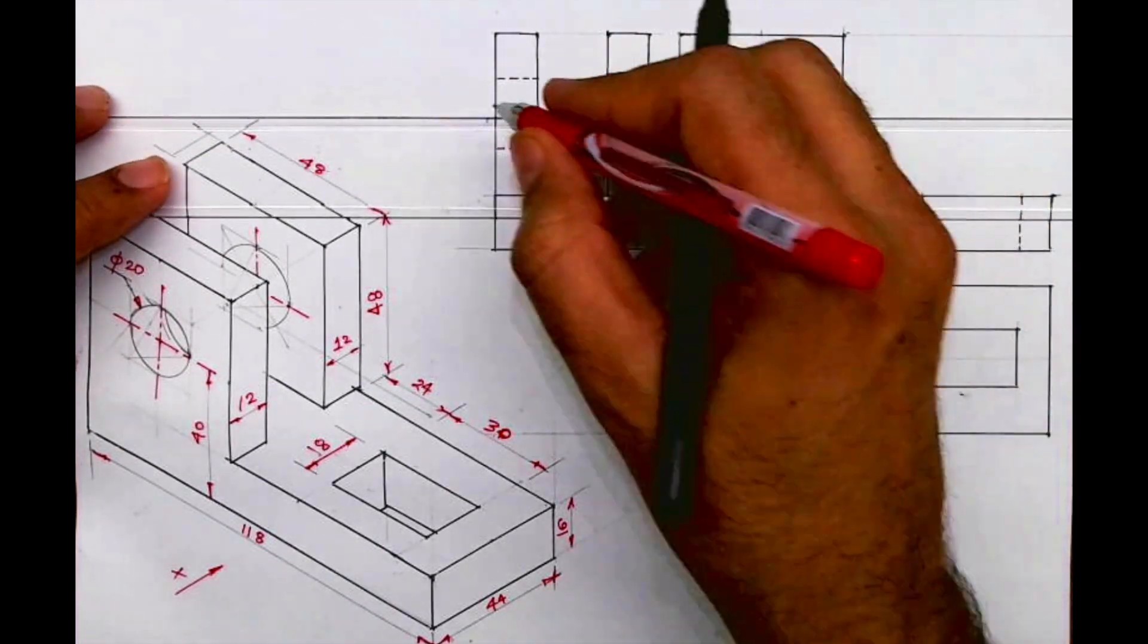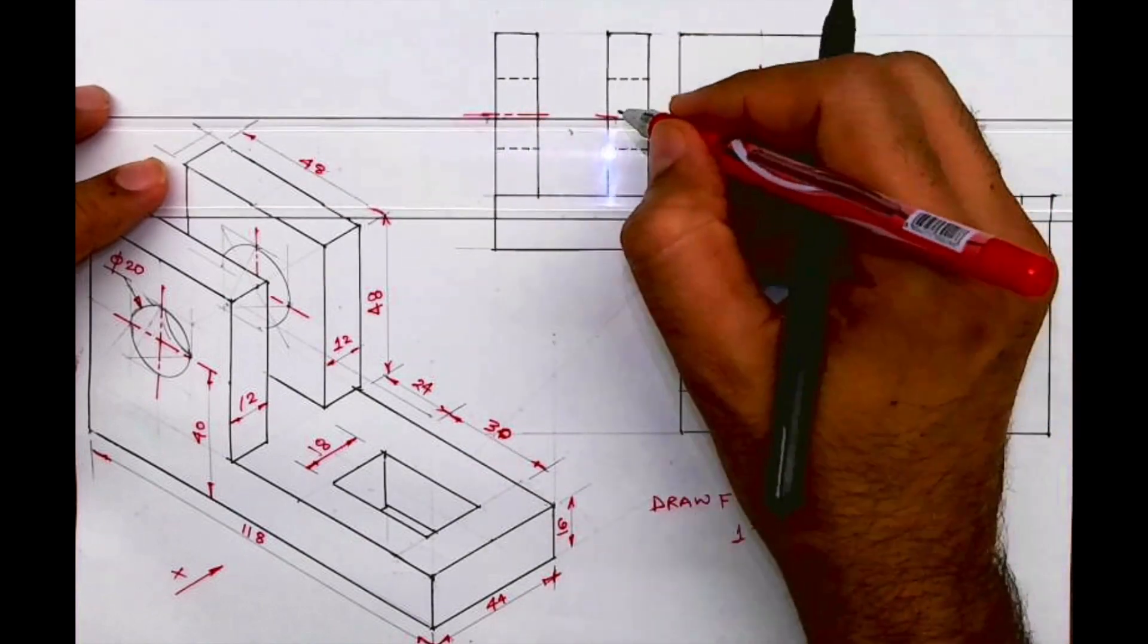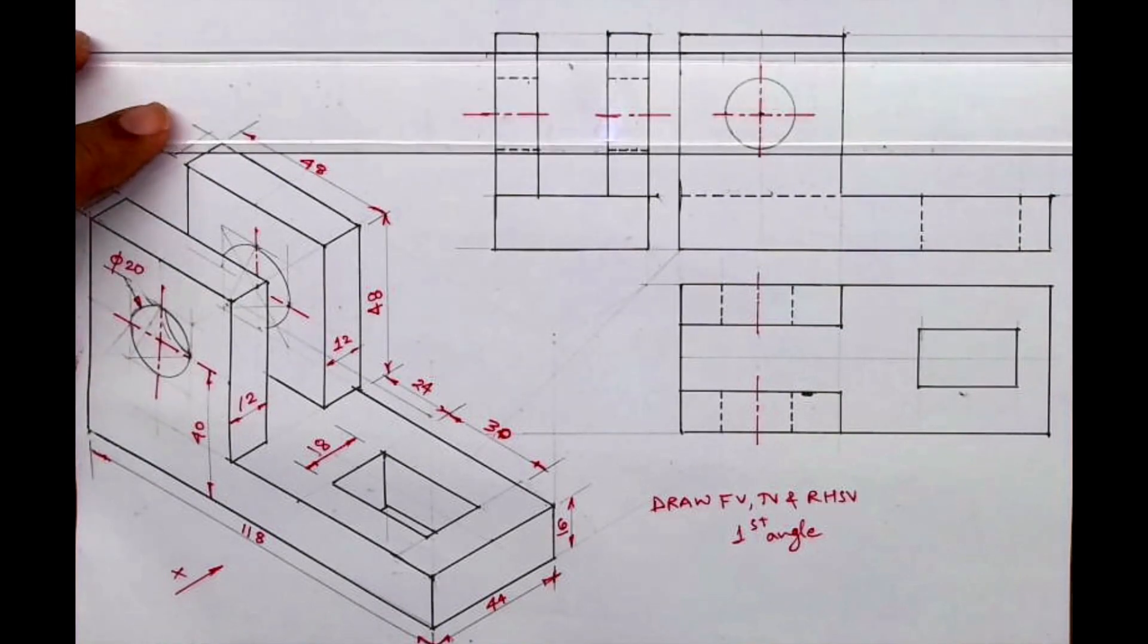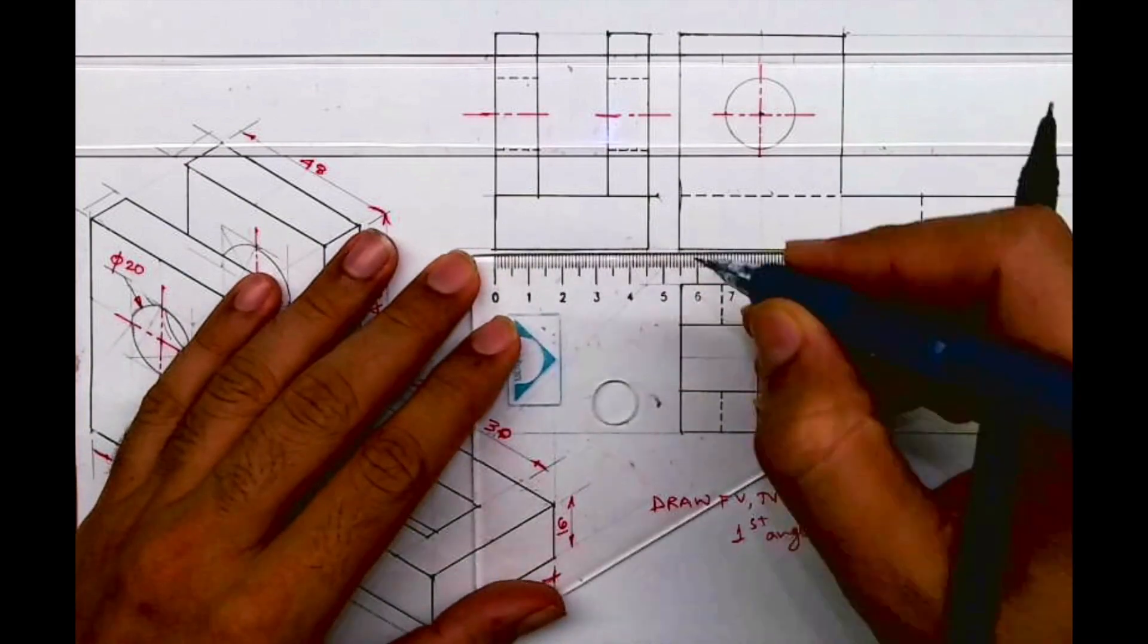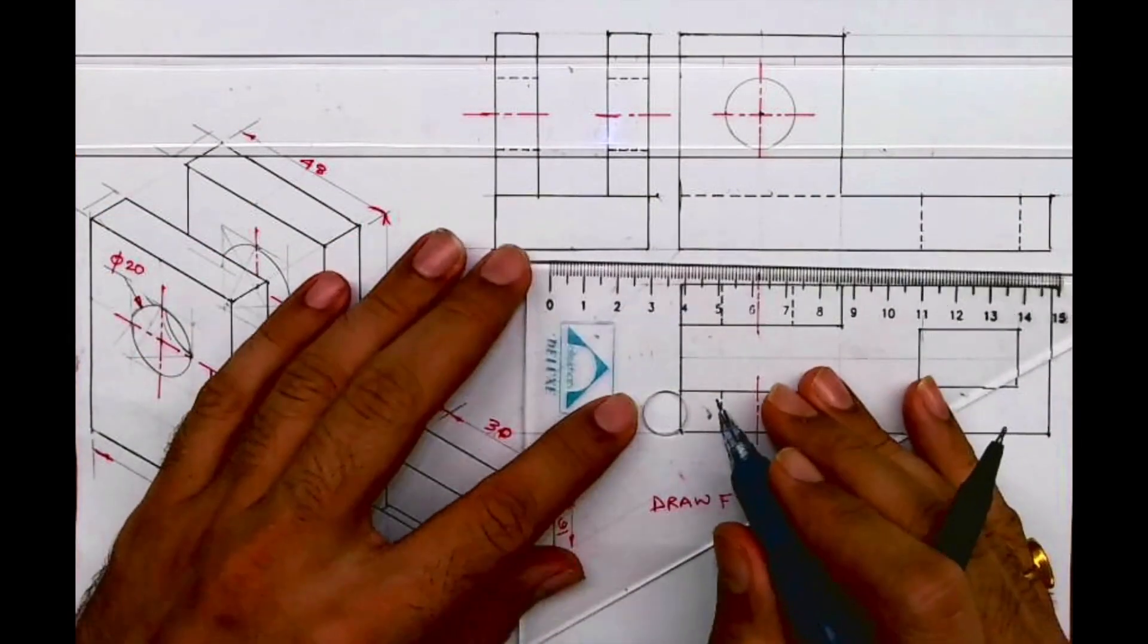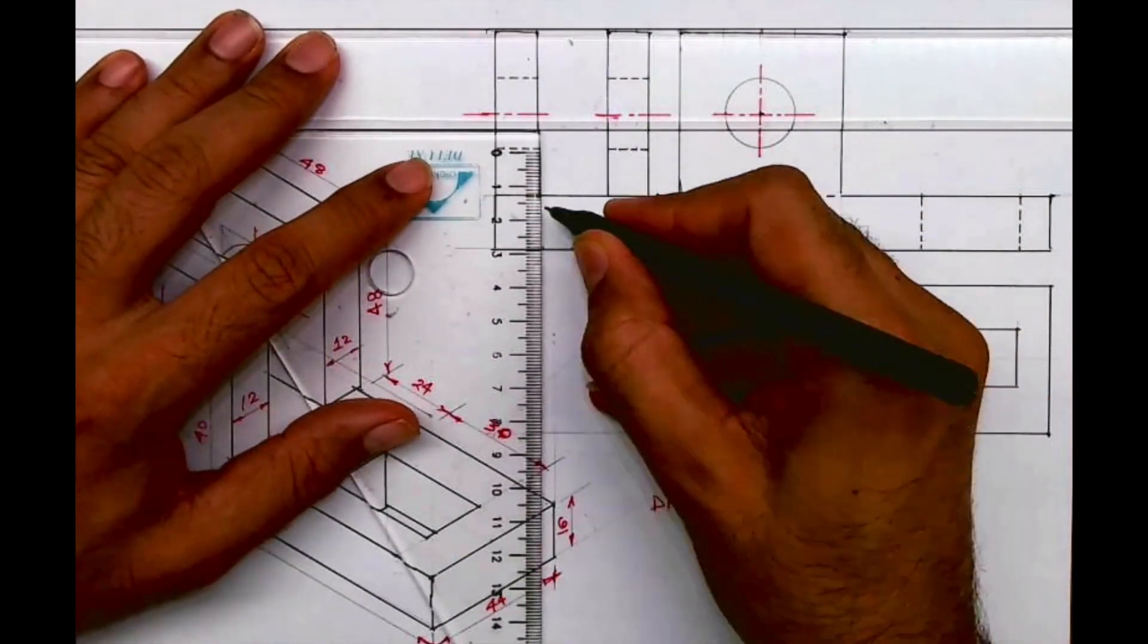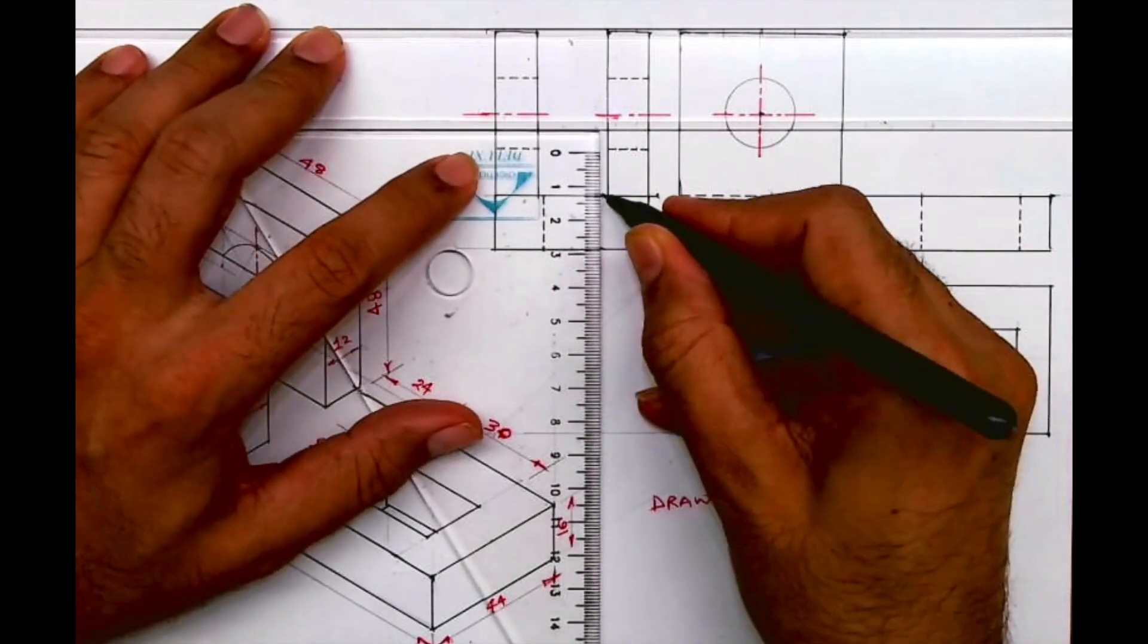And when you project that slot from the top view, this is the center line for the circle. You project from the top view, take the midpoint, and draw 9 on both sides. Those two lines will be dotted. I hope everyone understood front view, top view, and side view. Thank you.